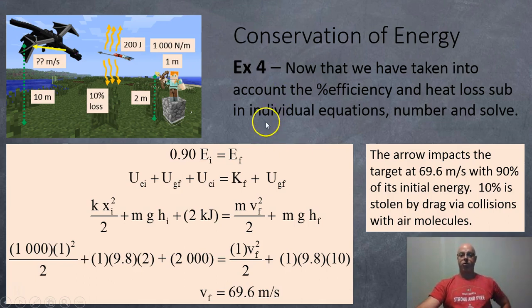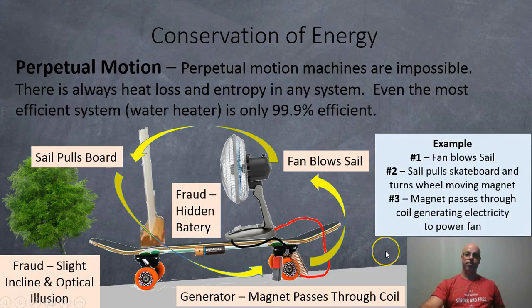So now that we've done that, we can move into the regular equations. So we get 0.90 Ei. So we're going to find out what our initial energy is. We're going to multiply it by 0.90. And then we're going to solve for our final velocity. We get 69.6 meters per second. So the arrow impacts the target at 69.6 meters per second, 90% of its energy. And it has lost 10% of its energy.